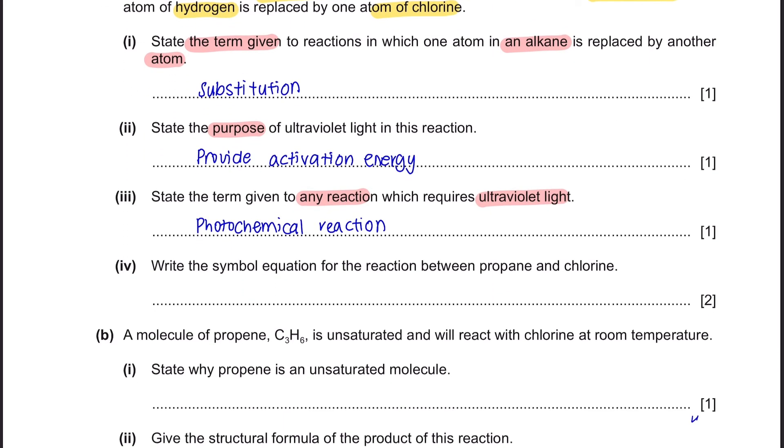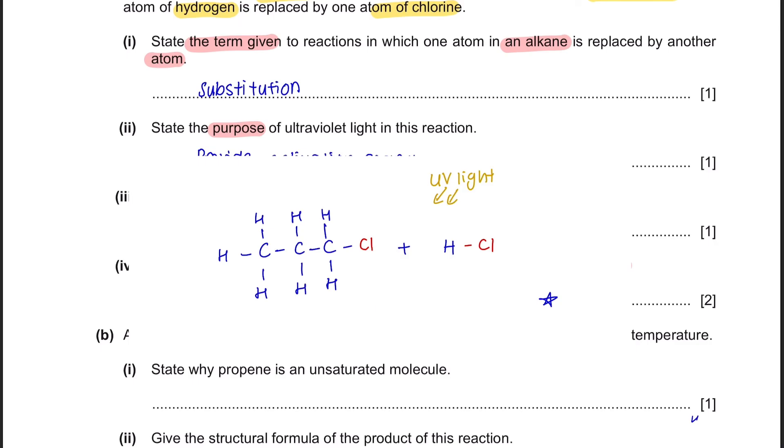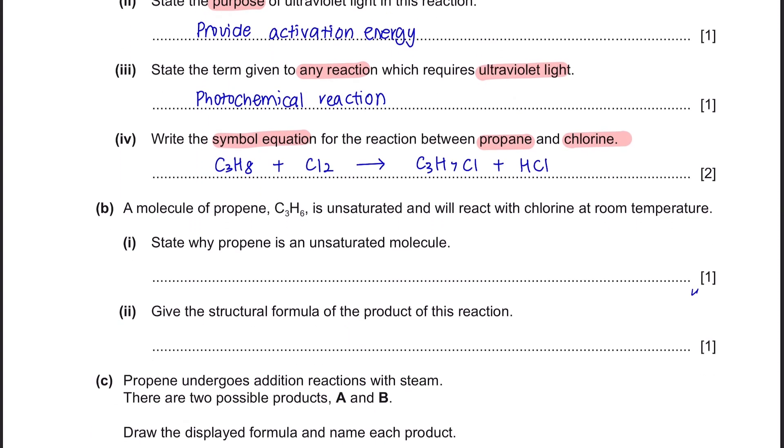Part 4: Write the symbol equation for the reaction between propane and chlorine. Back to our reaction previously whereby we have propane reacting with Cl2 to give us chloropropane and HCl. This is how we're going to express our symbol equation.